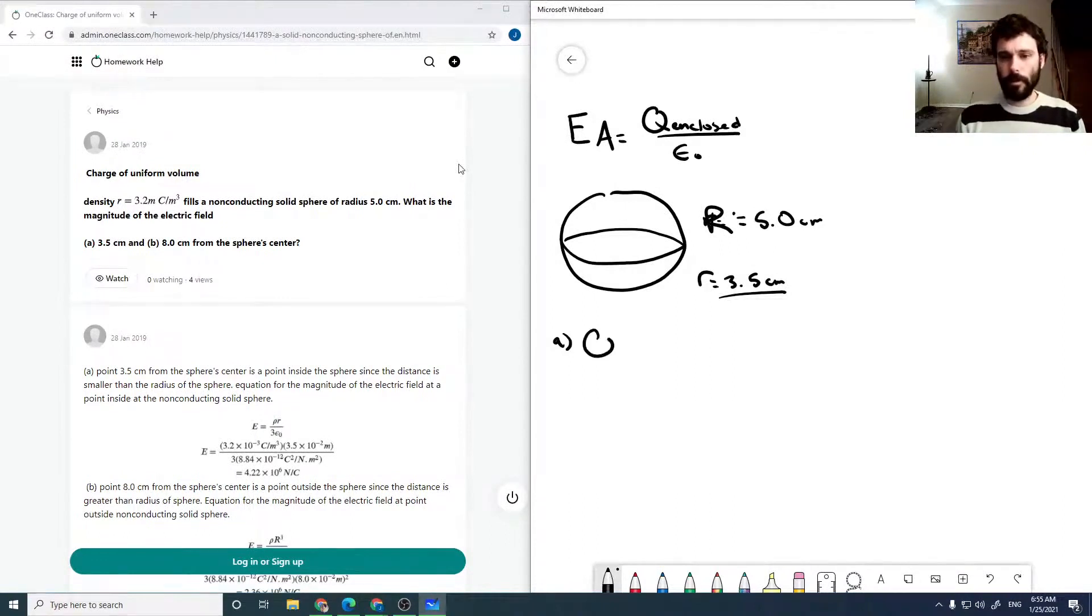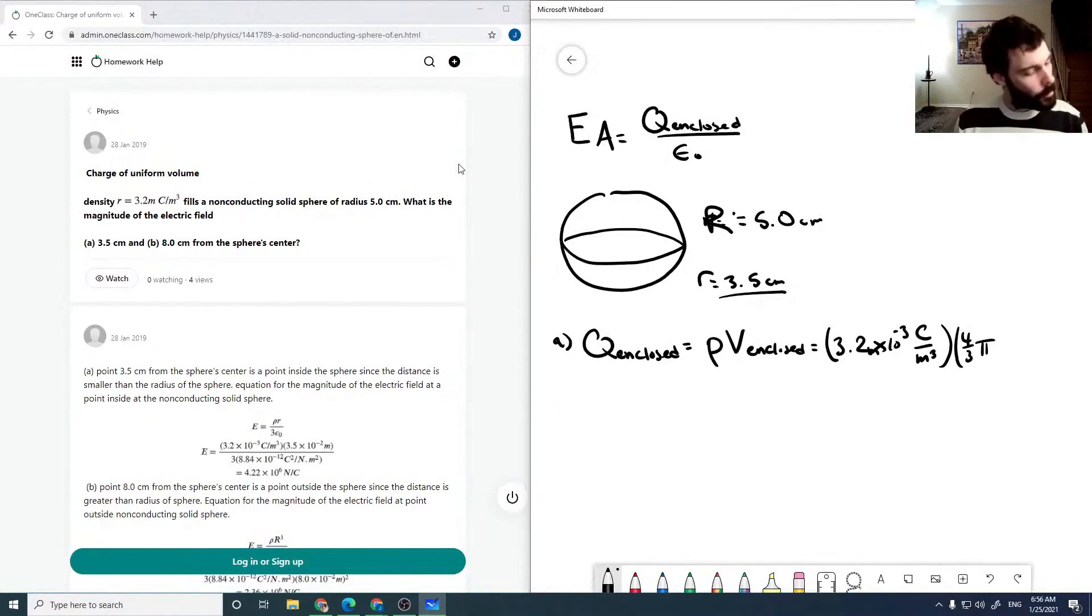Our Q enclosed will be the charge density times the volume enclosed, which will be 3.2 times 10 to the minus 3 coulombs per meters cubed. The volume enclosed will be four-thirds pi r cubed, where r is less than the sphere radius.